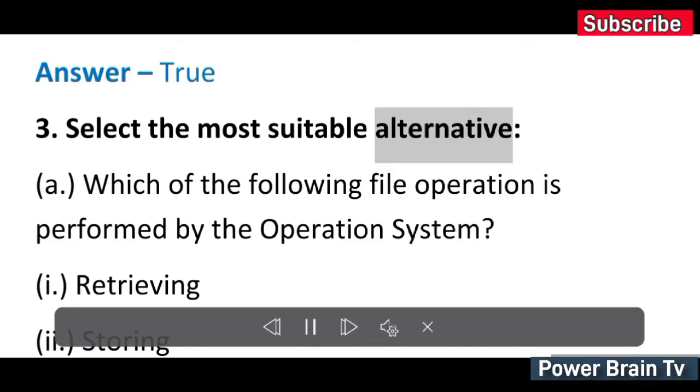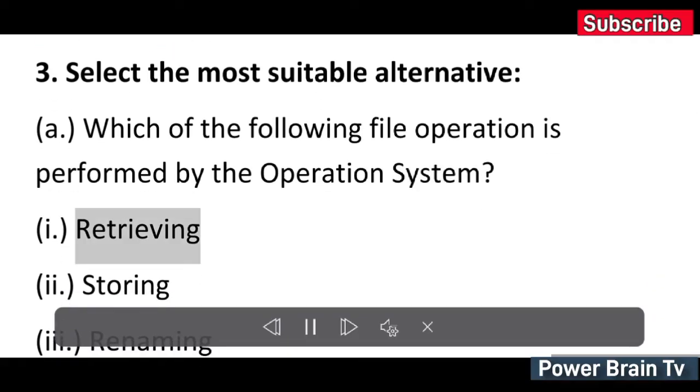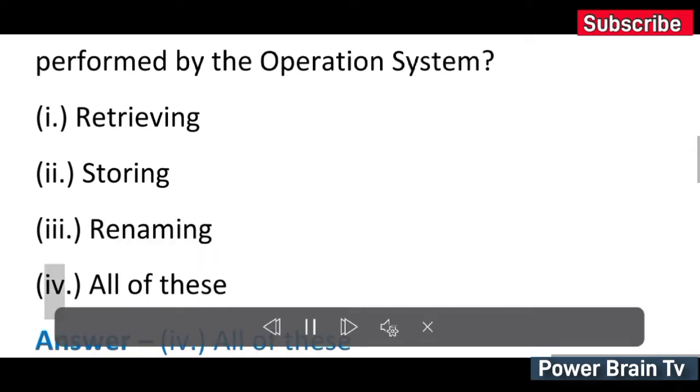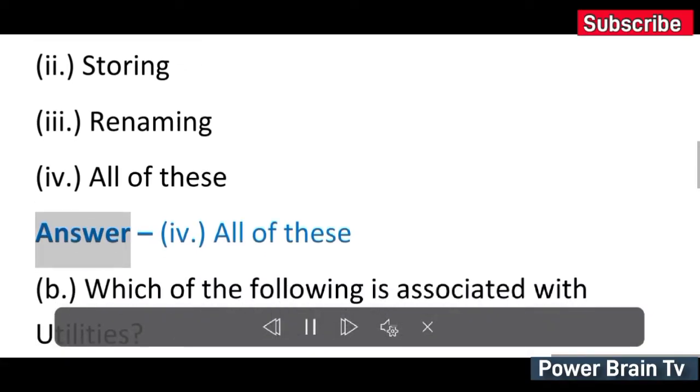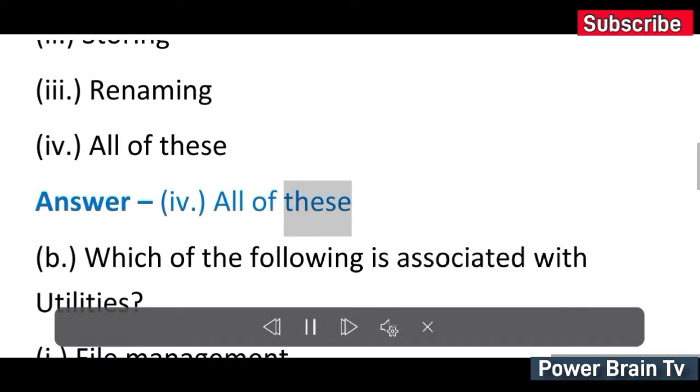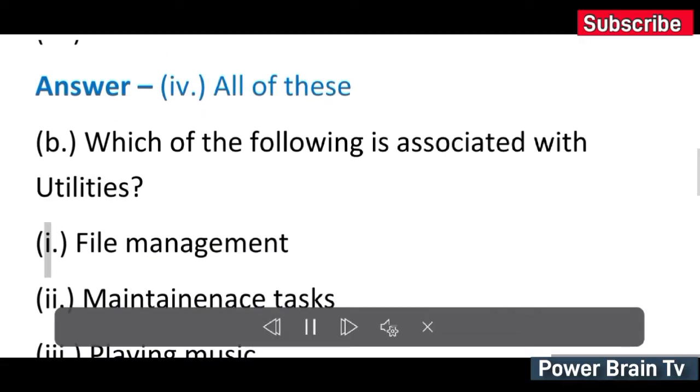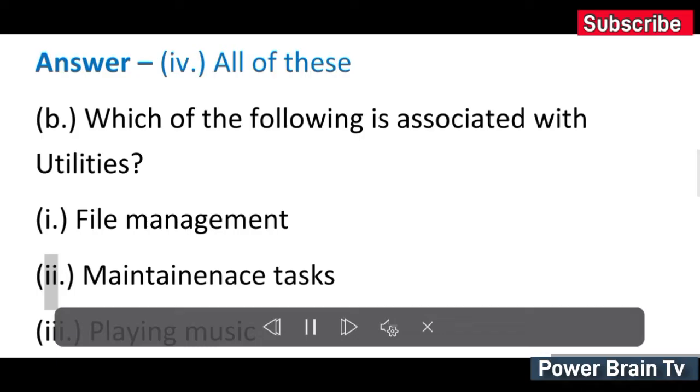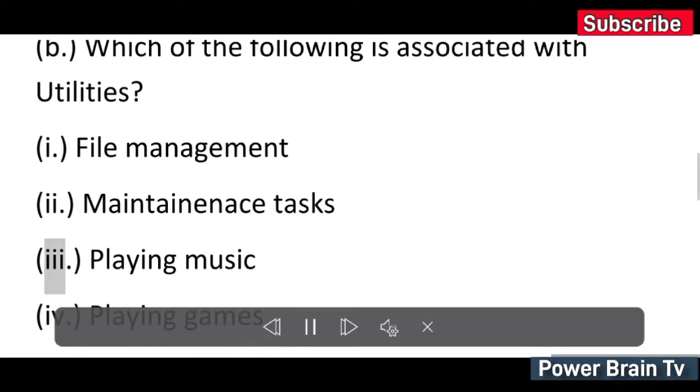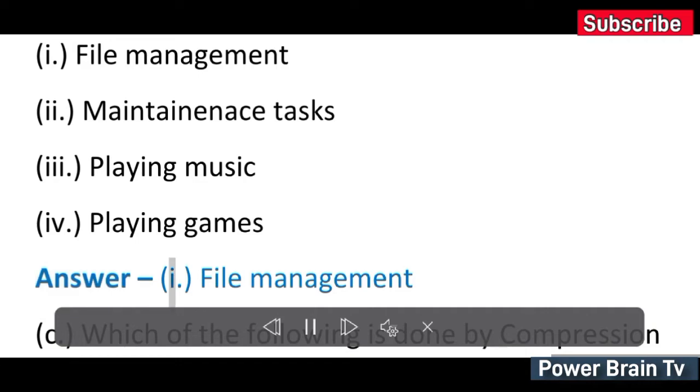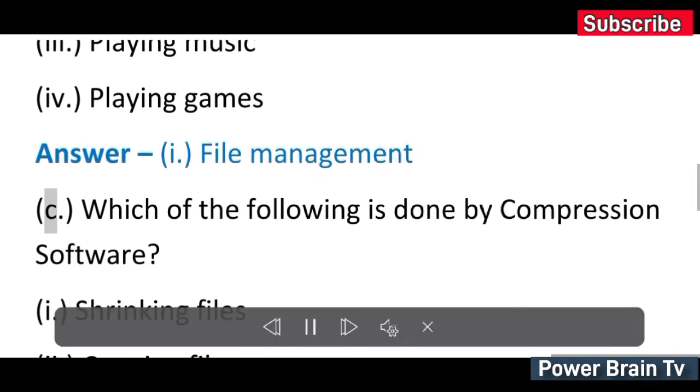3. Select the most suitable alternative. (a) Which of the following file operation is performed by the operating system? (i) Retrieving (ii) Storing (iii) Renaming (iv) All of these. Answer: (iv) All of these. (b) Which of the following is associated with utilities? (i) File management (ii) Maintenance tasks (iii) Playing music (iv) Playing games. Answer: (i) File management.